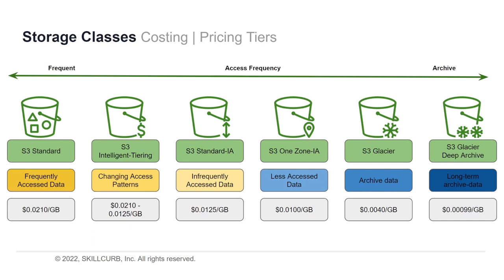As you move towards more infrequent access in these storage classes, the cost for storing data decreases. The most expensive option is S3 Standard at $0.021 per GB, and the cheapest is S3 Glacier Deep Archive at $0.00099 per GB. However, Glacier Deep Archive can only be accessed within certain hours — you cannot have ready access to it. A better option is S3 Intelligent-Tiering, which adjusts your bucket tier automatically as your access patterns change.